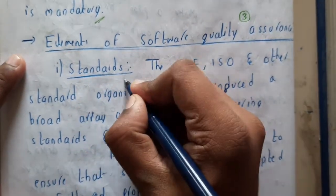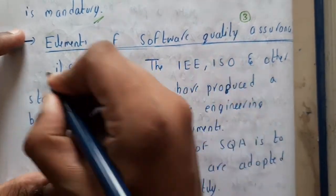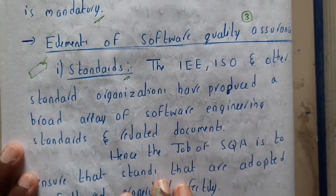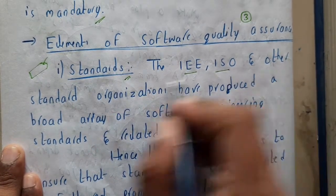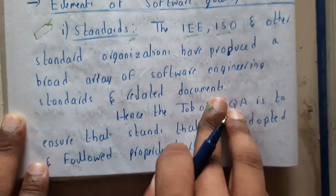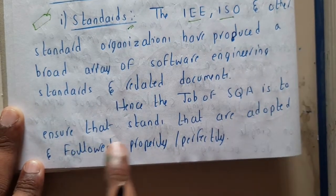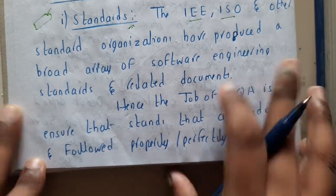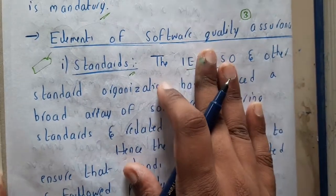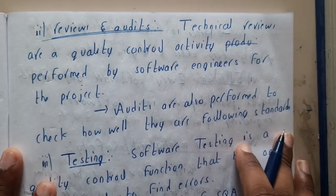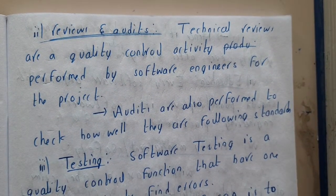The first element is standards. Whenever anything is mandatory or done frequently, it will have some standards — some set of rules which should be followed. The IEEE, ISO, and other standard organizations have produced a broad array of software engineering standards related to documentation. The job of SQA is to ensure that the standards adopted are properly and perfectly allocated, so your software quality assurance falls within a recognized standard and stays in a safe zone.